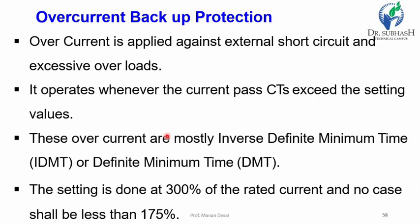Over-current backup protection is applied against external short circuits and excessive overload. It operates whenever the current passing through the CT exceeds the setting values. These over-current relays are mostly IDMT or DMT type. The setting is done at 300% of the rated current and in no case shall be less than 175% of the rated current.